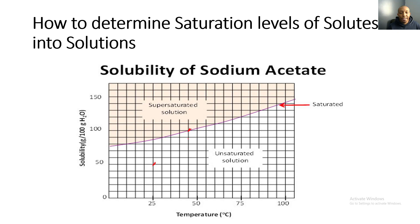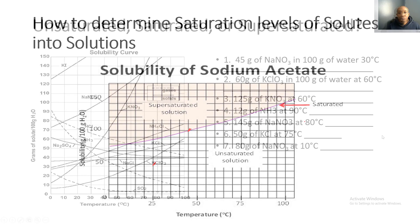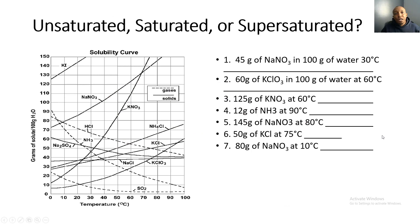If I plot a point that is on the line, that tells us it is a saturated solution. Let's take a look at the following solutes: unsaturated means we can add more solute, saturated means there's an equal amount of solute and solvent, and supersaturated means there's too much solute and not enough solvent.